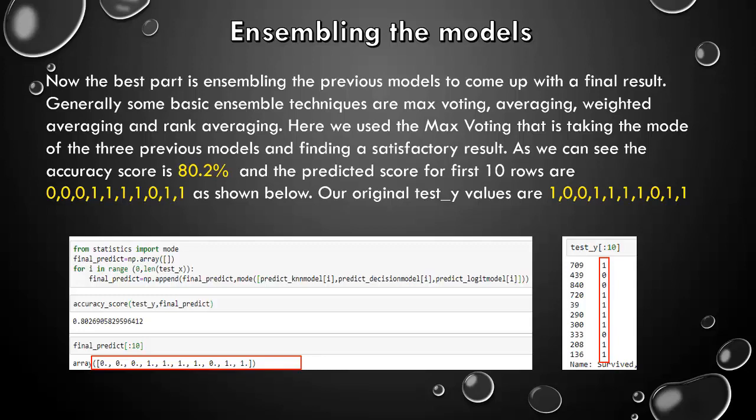Now, assembling the models. Now, the best part is assembling the previous models to come up with the final result. Yes, interesting. Generally, some basic ensemble techniques are max voting, averaging, weighted averaging and rank averaging. Here, we use the max voting that is taking the mode of the three previous models and finding a satisfactory result. The models we took were KNN model, decision models and logistic model. And now, we can see the accuracy score as 80.2 percentage and the predicted score for the first 10 rows are 0,0,0,1,1,1,1,0,1,1 as we can see below.